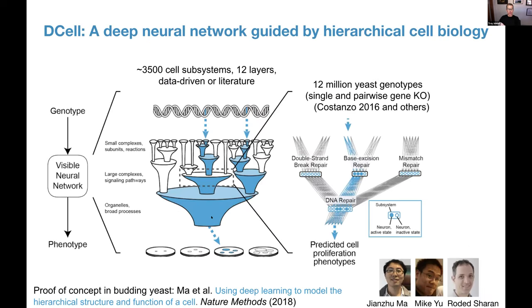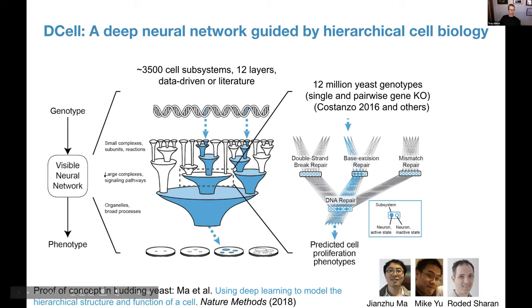Here is the original proof of concept. If you understand this, then the rest of the talk is essentially a variant of this idea. This is a slide from our first paper, which described D-Cell, a deep neural network guided by hierarchical cell biology, which was trained and operated in budding yeast as a model eukaryotic cell.